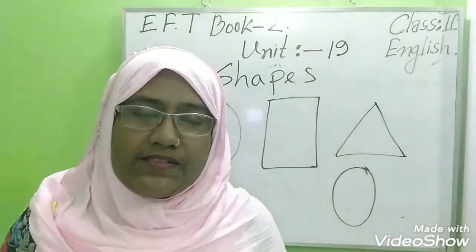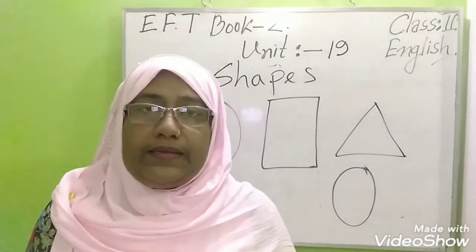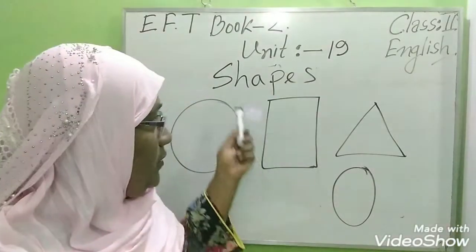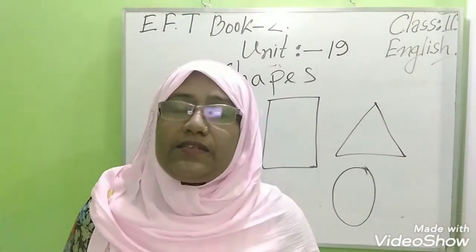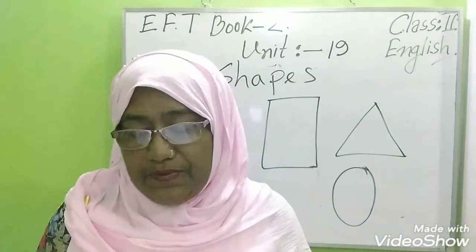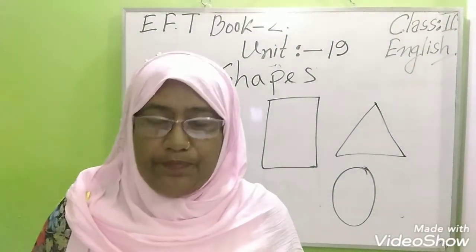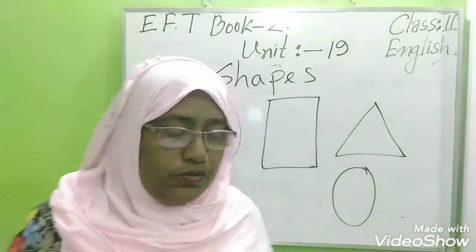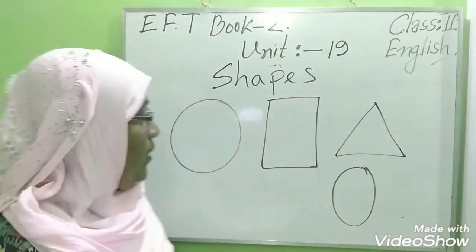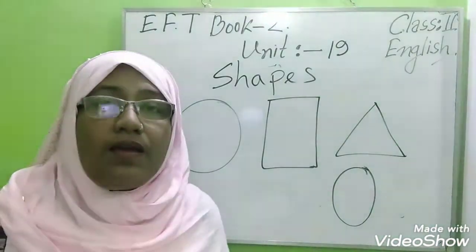In this unit, unit 19, we will learn about four shapes. These shapes are square, triangle, circle, and rectangle. You can see in your book also. We find four types of shapes: circle, triangle, rectangle, and square.